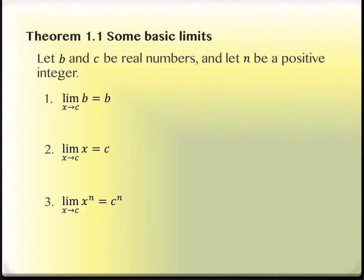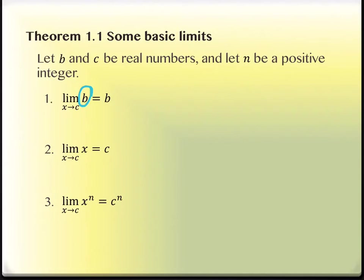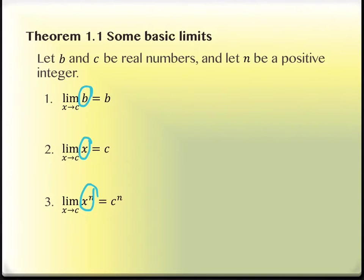What you want to imagine is that these are functions inside of here for y equals. So y equals b, y equals x, and y equals x to the nth power. If you have the equation y equals b, and b is just a number, that ends up being a horizontal line. So no matter where you are along a horizontal line, you're at that same horizontal y value, in this case b. So it doesn't matter what the limit is as x approaches — your constant b will always be the y value you're at.